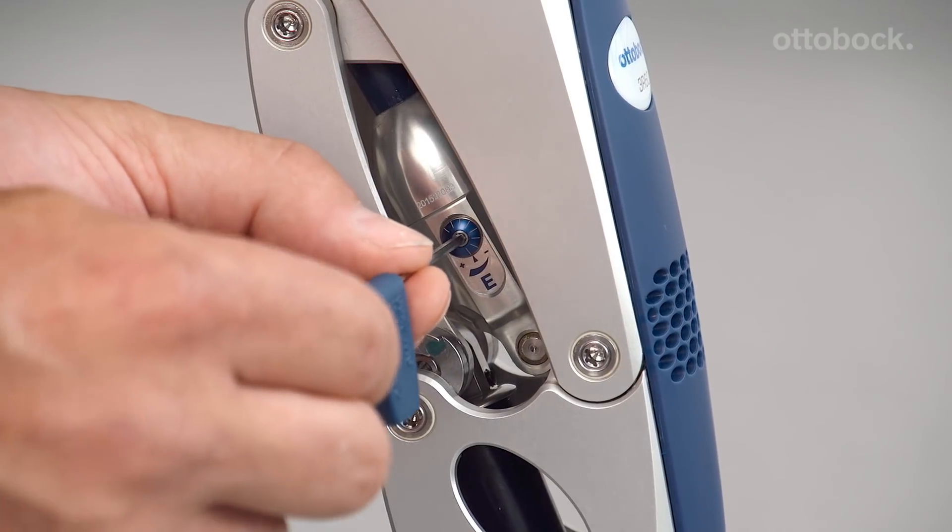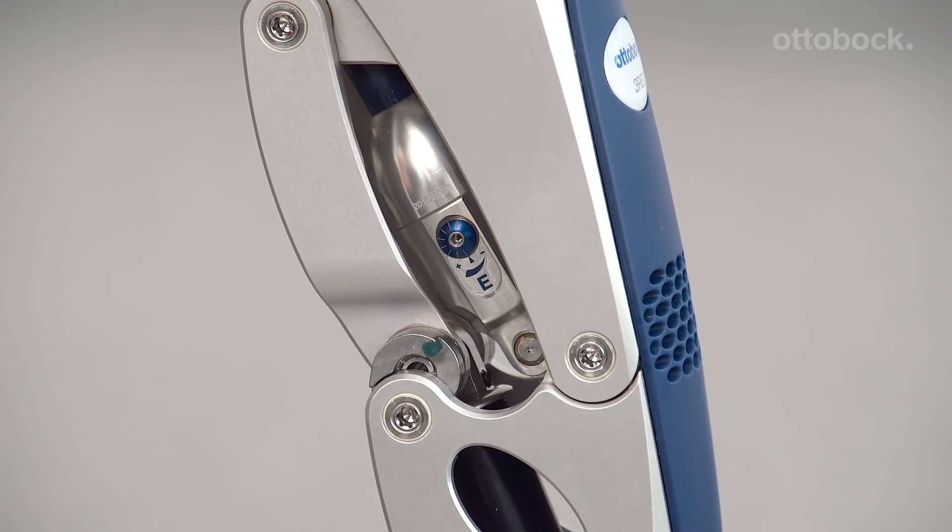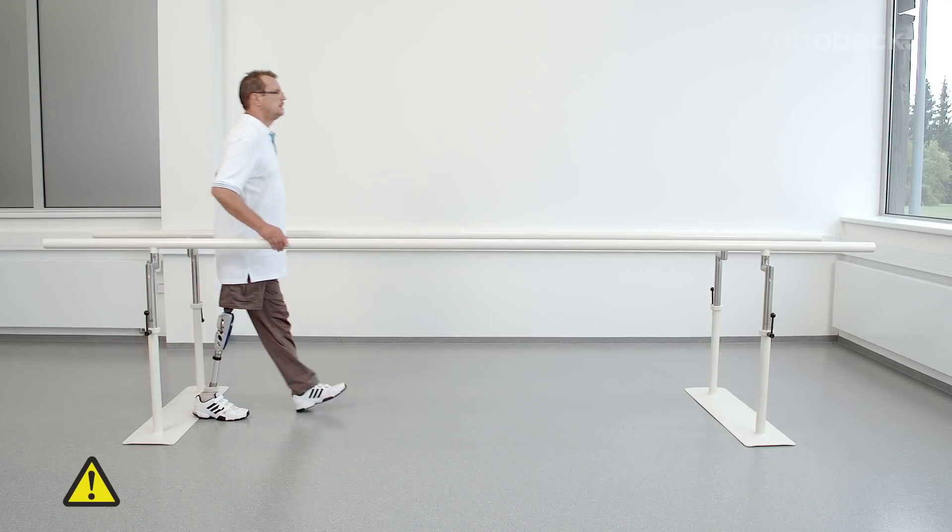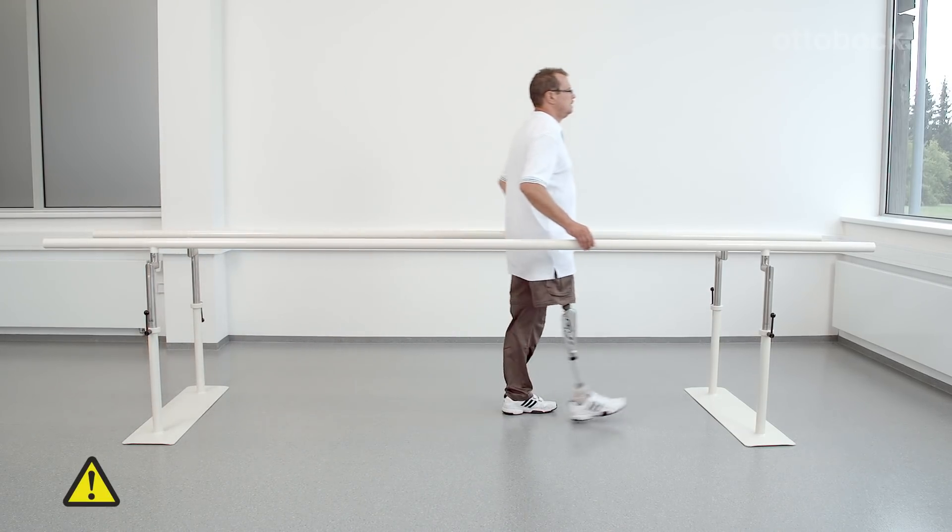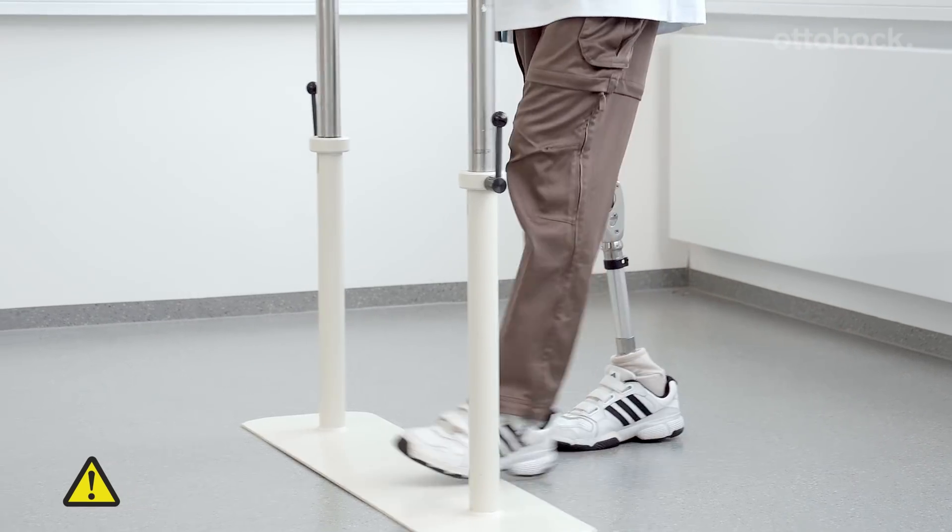Here the extension damping is shown at its maximum. As shown here, an extension damping set too high means that the knee joint no longer comes into full extension, which could lead to a fall.